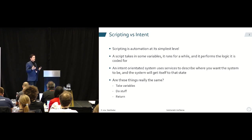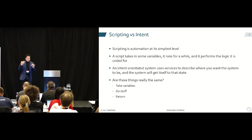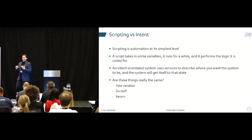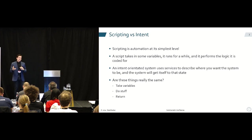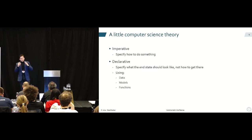So what is scripting? Scripting is automation at its very simplest level. A script is going to take in some variables, run for a while, and performs logic that is coded for. Versus in an intent-oriented system, you're going to use a service, and that's going to describe the state that you want the network to get to. And the system will get itself to that state somehow. Are these things really the same? Either way, we're passing in variables, we're going to do stuff and come back. So let's consider this from a computer science perspective.